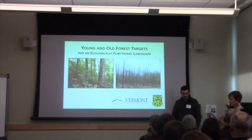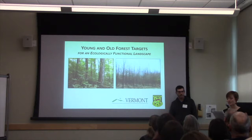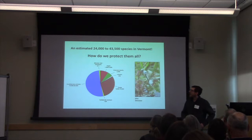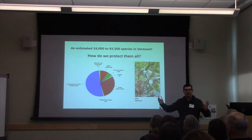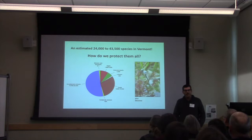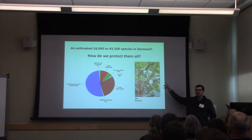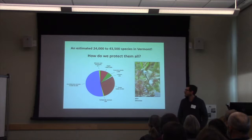From Vermont Fish and Wildlife, he's going to be talking to us about young and old forest as ecologically functional landscape. I want to start with something that may not immediately seem like we're going to connect to the forest, but we will get there. In Vermont, there's somewhere between 20,000 to 40,000 species here, and the mission of the Fish and Wildlife Department is the protection of all species and their habitats.